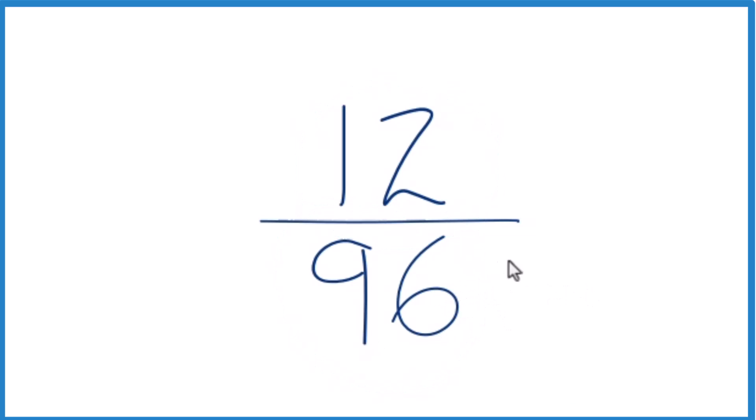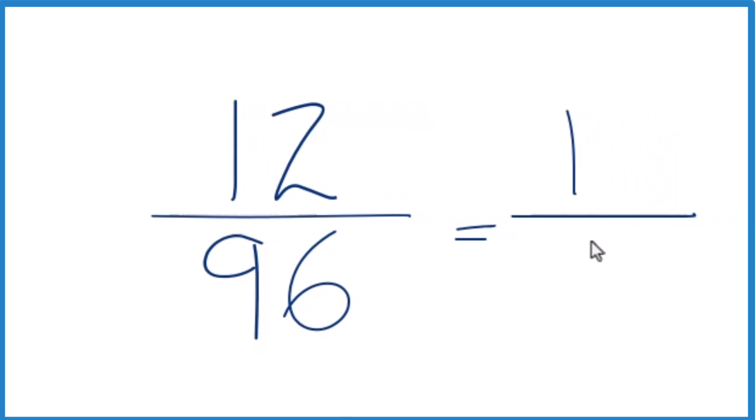So if you know that 12 times 8 is 96, that means that 12 is going to be our greatest common factor. Divide 12 by 12, you get 1. And then divide 96 by 12, you get 8.